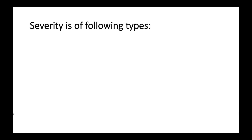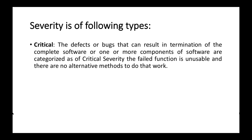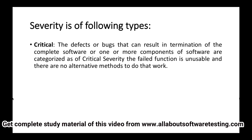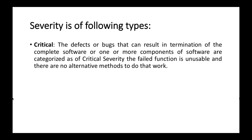We will study the types of severity of defects. The first type is critical. Defects or bugs that can result in termination of the complete software or one or more components are categorized as critical severity. The failed function is unusable and there are no alternative methods to do that work — the function the user wants to use will not be usable.